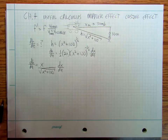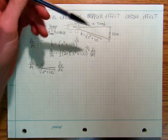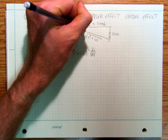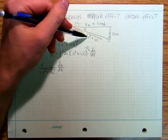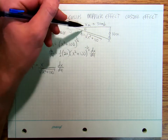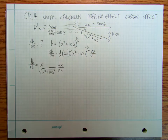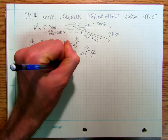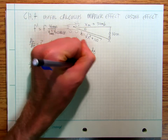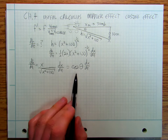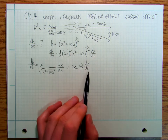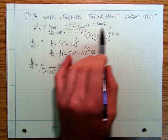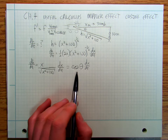This is also known as the cosine effect, because if you notice the angle theta here, x over the square root of x² + 100 is adjacent over hypotenuse — that's cosine of theta. So you could also say that dh/dt equals cosine(θ) · dx/dt. Whatever that angle is, that's how much of the ambulance's velocity is in your direction.